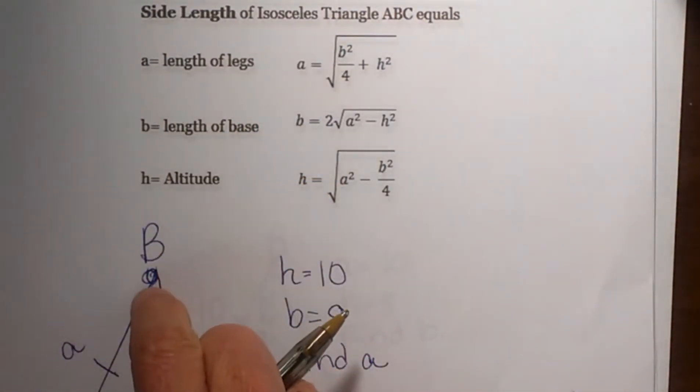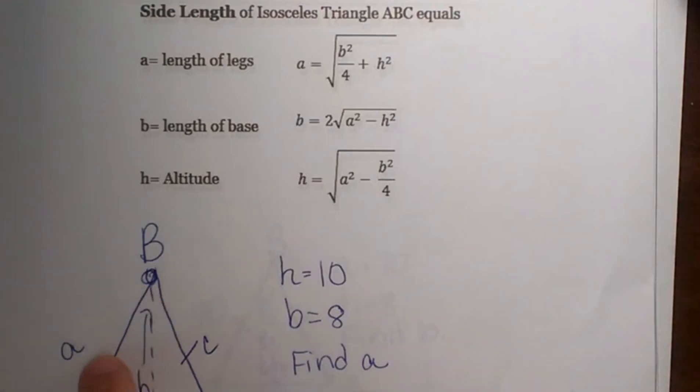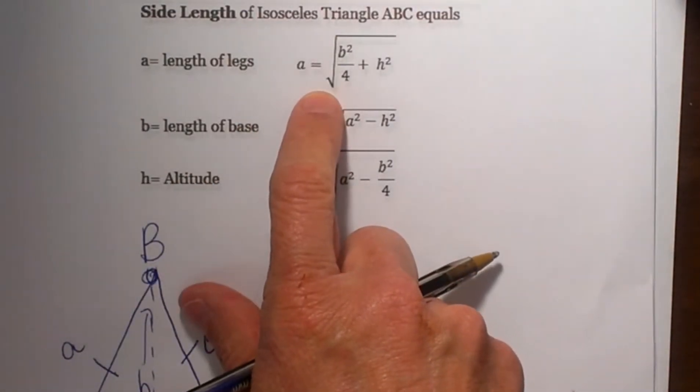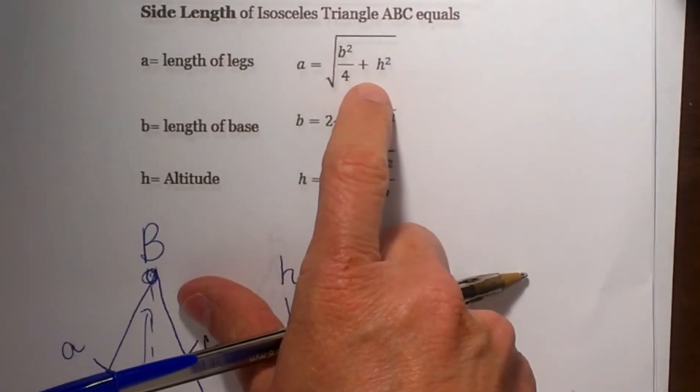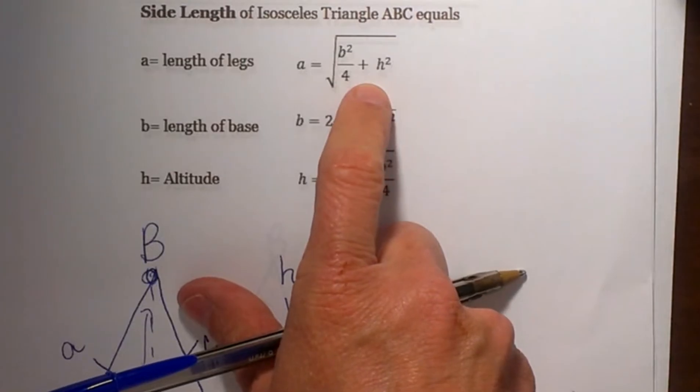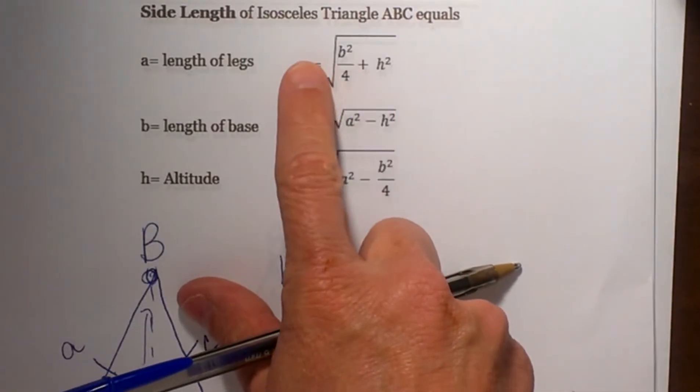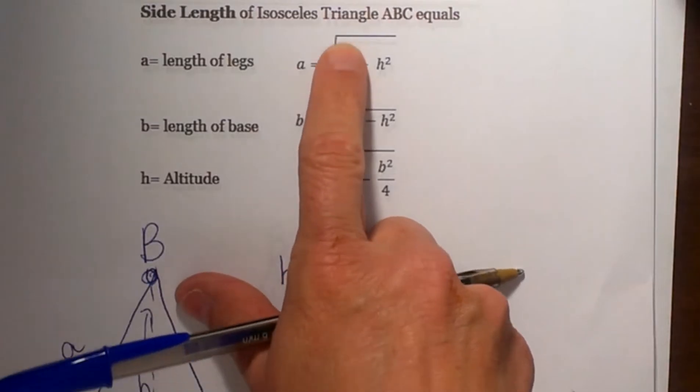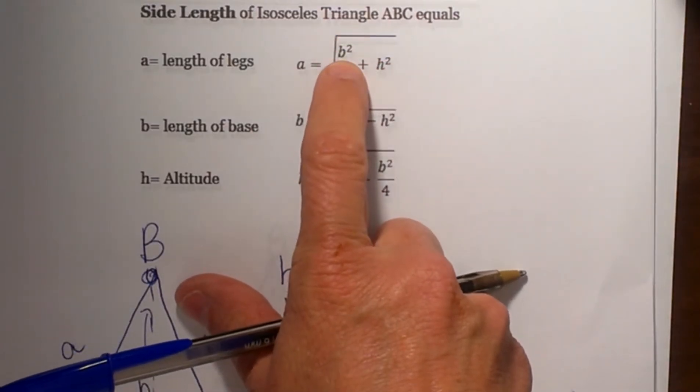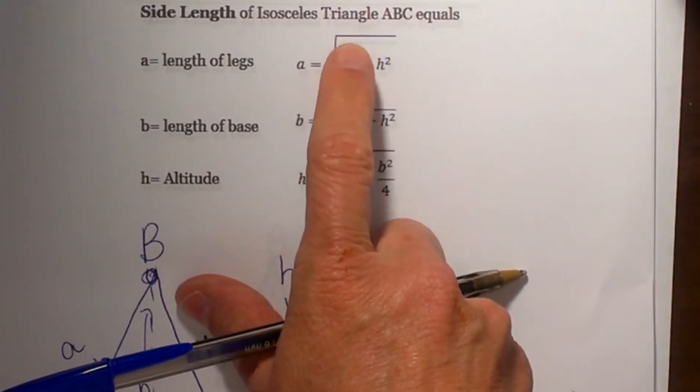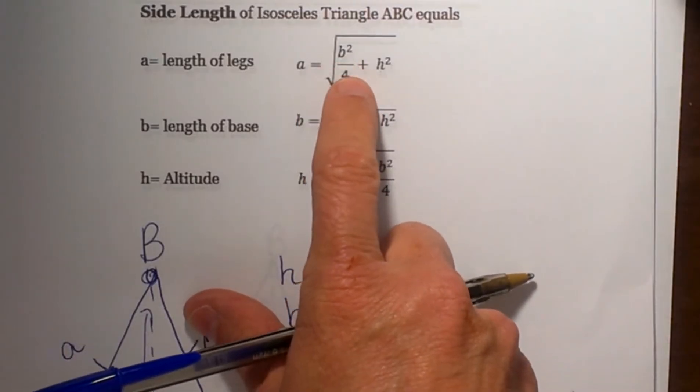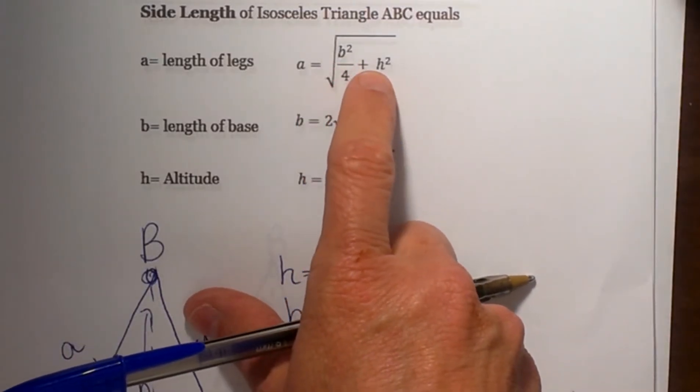To find the length of one of the legs on this isosceles triangle, we're going to use this formula. It's really just a fancy formation of the Pythagorean theorem, but it's a neat little shortcut. You're going to take the square root of b squared, where b is the base, divided by 4, and then add the height squared.